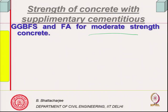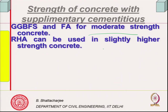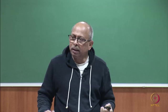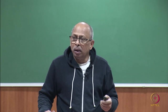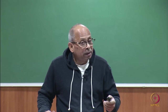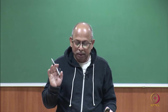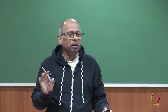Generally, one would prefer GGBFS and fly ash for moderate-strength concrete. Silica fume is preferred for high-strength concrete. You can have a judicious combination of all of them to achieve higher strength, considering cost as well. All of this makes for good sustainable material.